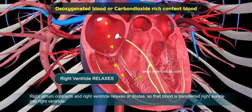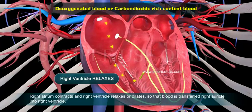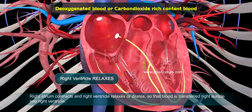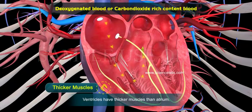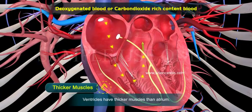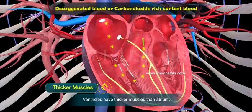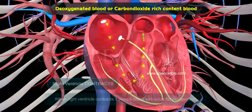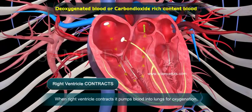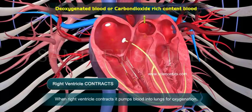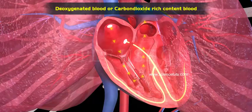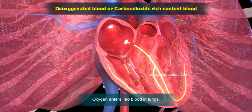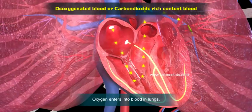Ventricles have thicker muscles than the atria. When the right ventricle contracts, it pumps blood into the lungs for oxygenation, where oxygen enters into the blood.